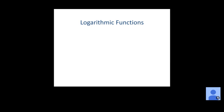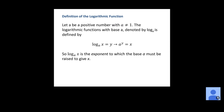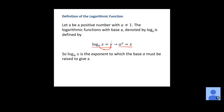First off, the definition of a logarithmic function. We're going to let a be a positive number, but a cannot be equal to 1. The logarithmic function with base a, denoted by base a log, is defined this way: the base a log of x equals y means that a to the y power is equal to x. These are equivalent statements. We can take a logarithmic equation and rewrite it in its exponential form. We're taking the base of our logarithm, raising it to the power, and it equals whatever value is inside the logarithm. So base a log of x equals y just means a to the y power equals x.